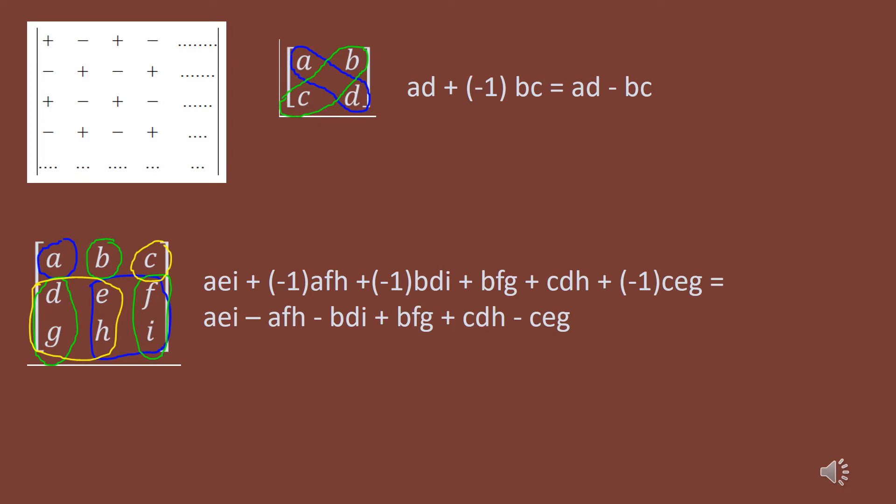The definition of whether terms should be positive or negative is confusing and convoluted, but it is the actual definition. However, there is a visual pattern that is much easier to recognize. For any size matrix, you can create a checkerboard grid of positives and negatives starting with a positive in the upper left-hand corner. For a 2x2, A is positive and one product is A times D; B is in a negative position so B times C is negative, giving a determinant of AD minus BC.